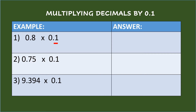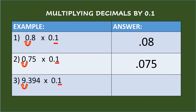Multiplying decimals by one-tenth. One-tenth has one decimal place, so move the decimal point in the multiplicand one place to the left and put the decimal point. In Example 2: 75 thousandths times one-tenth. One-tenth has one decimal place, so move the decimal point one place to the left and put the decimal point. In Example 3: 9 and 394 thousandths times one-tenth. One-tenth has one decimal place, so move the decimal point one place to the left and put the decimal point.